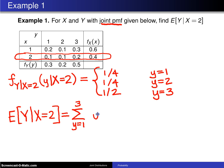g of y in this case is just y multiplied by the conditional probability mass function f of y given x is equal to 2.